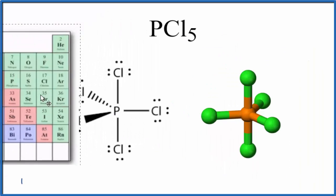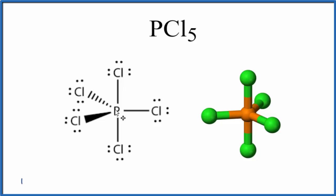If we look at the structure for PCl5, we see we have the phosphorus here in the center, and then chlorine atoms, five of them, spread around the outside.